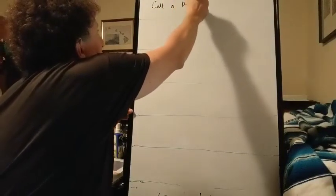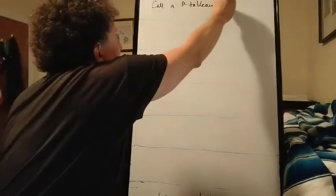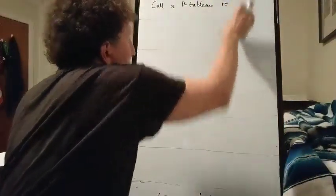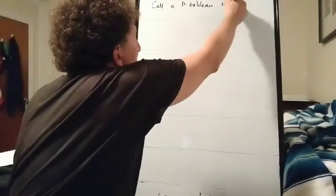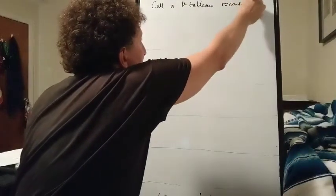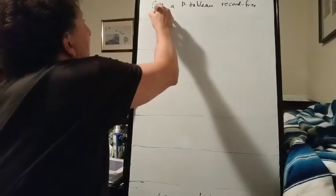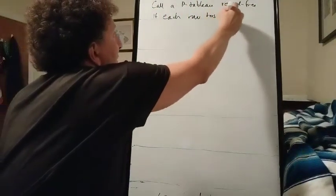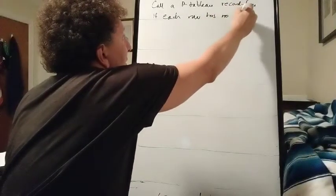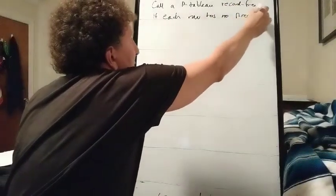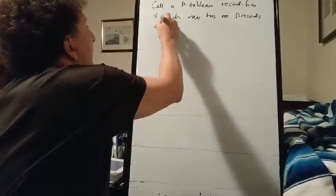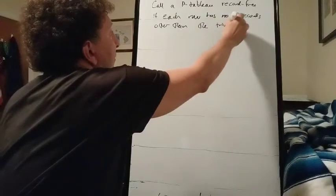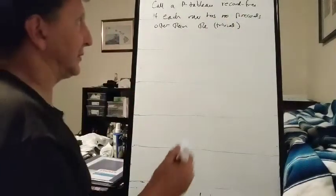We call a p-tableau record-free if each row has no p-records other than the first element, which trivially is a p-record.